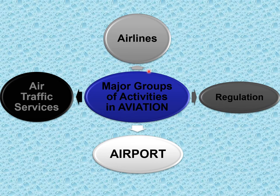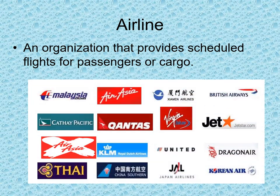The major groups of activities in aviation are: airport, air traffic services, airlines, and regulations. An airline is an organization that provides scheduled flights for passengers or cargo. Some of the leading airlines of the world can be seen in this context.